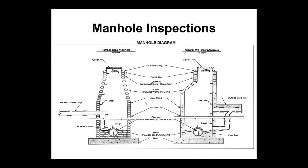What you see now is a profile view of manholes — a brick manhole on the left and a concrete manhole on the right. What the MACP program does is let us look at manholes almost as a vertical pipeline, starting with the cover, the frame, the frame seal, the chimney, the cone, and the wall sections, all the way down to the bench, the channel, and all the pipe connections.